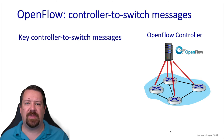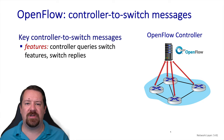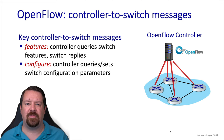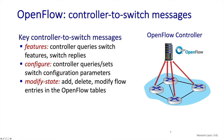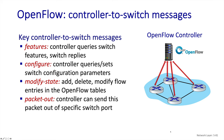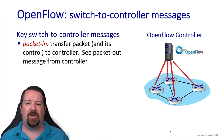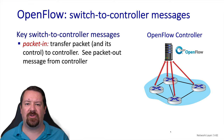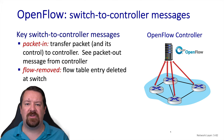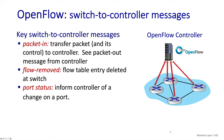Here are some key controller-to-switch messages. One allows the controller to ask the switch what features it supports — for example, a basic switch may be able to perform OpenFlow forwarding but not advanced features like rate limiting a link. The controller can also send a configuration message to request or set the state of a particular setting, and manipulate the flow table via modify state messages. A particularly interesting one is the packet out message, where the controller can encapsulate a packet and tell the switch to send it out a particular port. On the switch-to-controller side, we have the packet in message — where the switch receives a packet it's unsure what to do with and sends it to the controller — the flow removed message when a flow rule has timed out, and port status messages to inform the controller of a change in state on one of its ports.